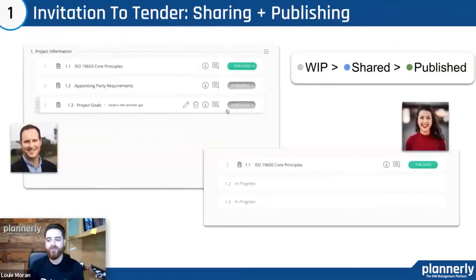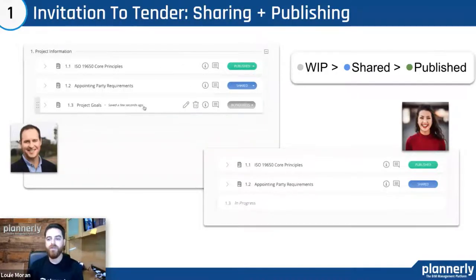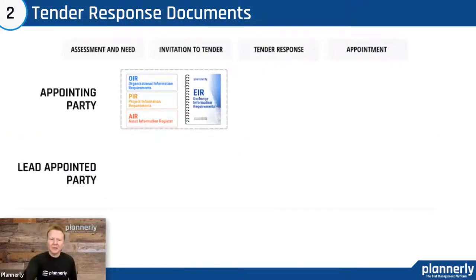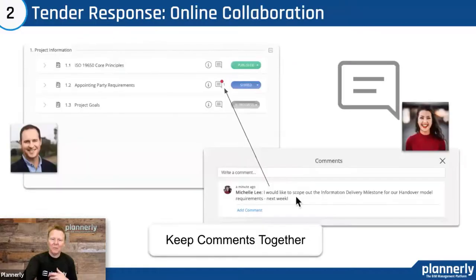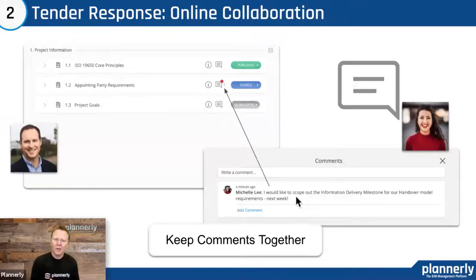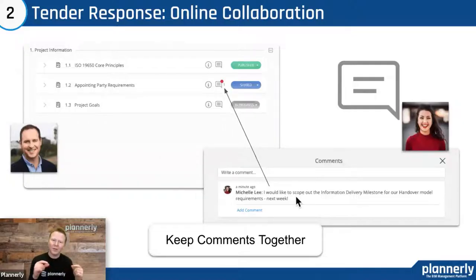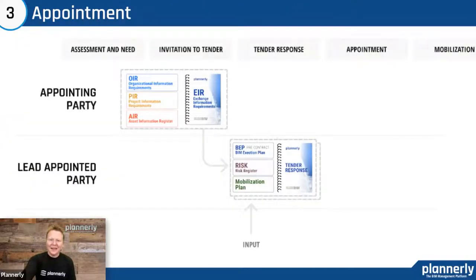A huge thing about that is consolidating all that information in the same area you're building it, instead of using another platform to communicate and process feedback — you're doing that in the same location. So after we've had an invite, we then get a response. The team that's responding needs to get involved and maybe collaborate and ask questions. In a traditional workflow, they would potentially receive a PDF and it would take a long time to get communication backwards and forwards. One of the really cool things about online collaboration now is that those teams invited to that tender workflow can actually ask questions inside of the app and inside of the specific requirements.